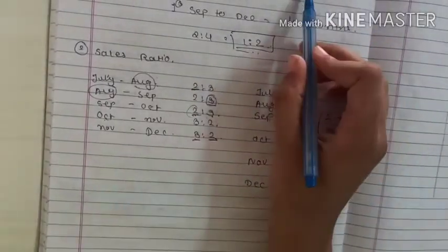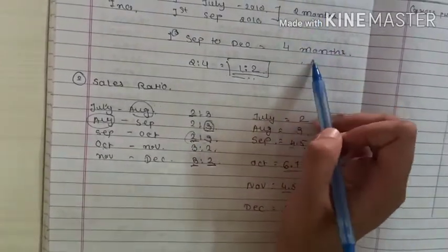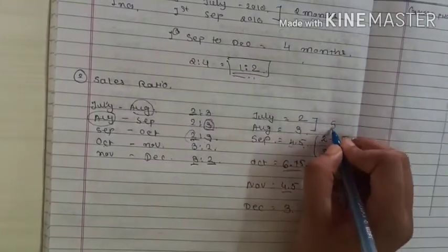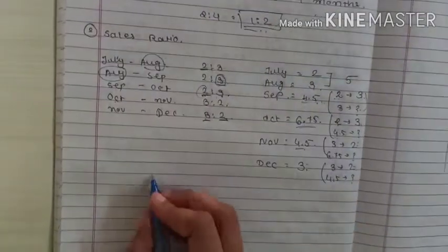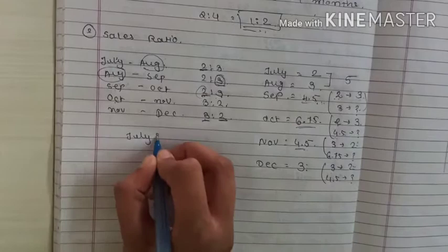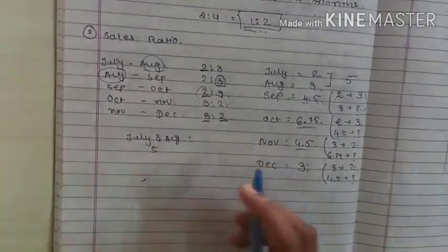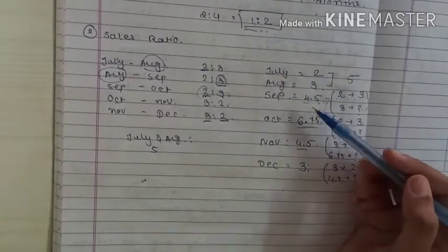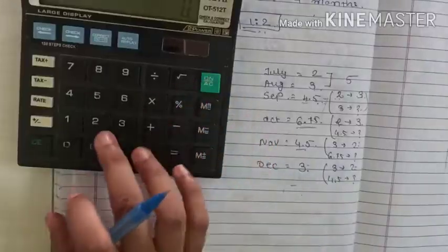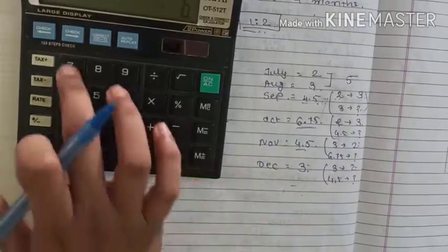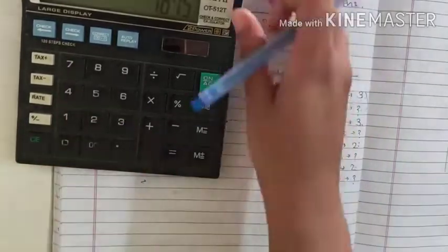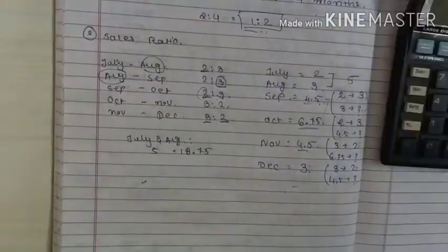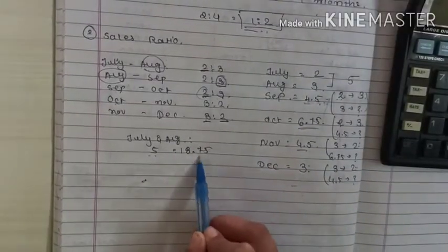Now we separate these into pre-incorporation and post-incorporation periods. Pre-incorporation is July and August — total = 2 + 3 = 5. Post-incorporation is September through December — total = 4.5 + 6.75 + 4.5 + 3 = 18.75. So we have pre = 5 and post = 18.75.